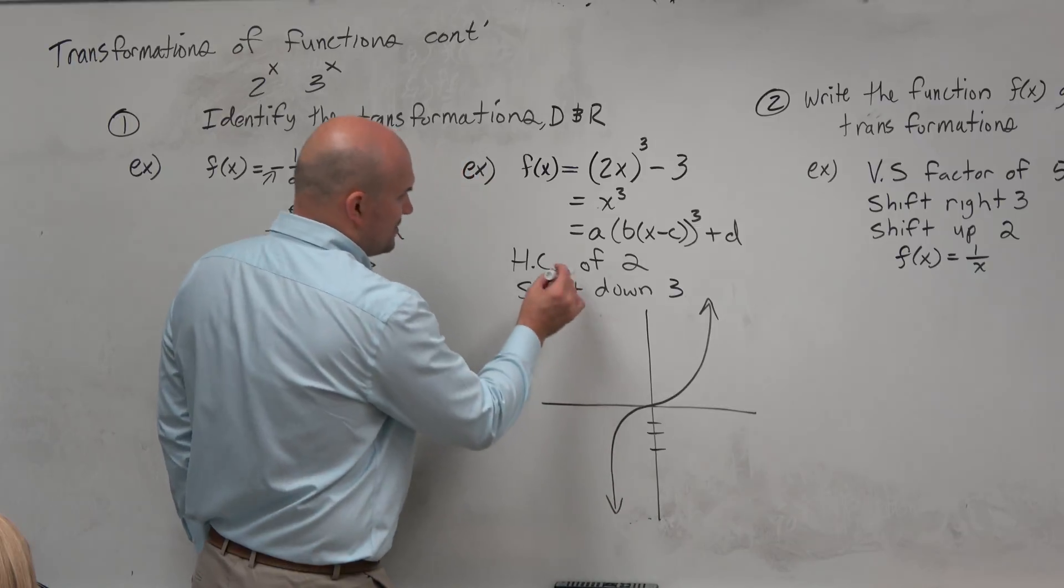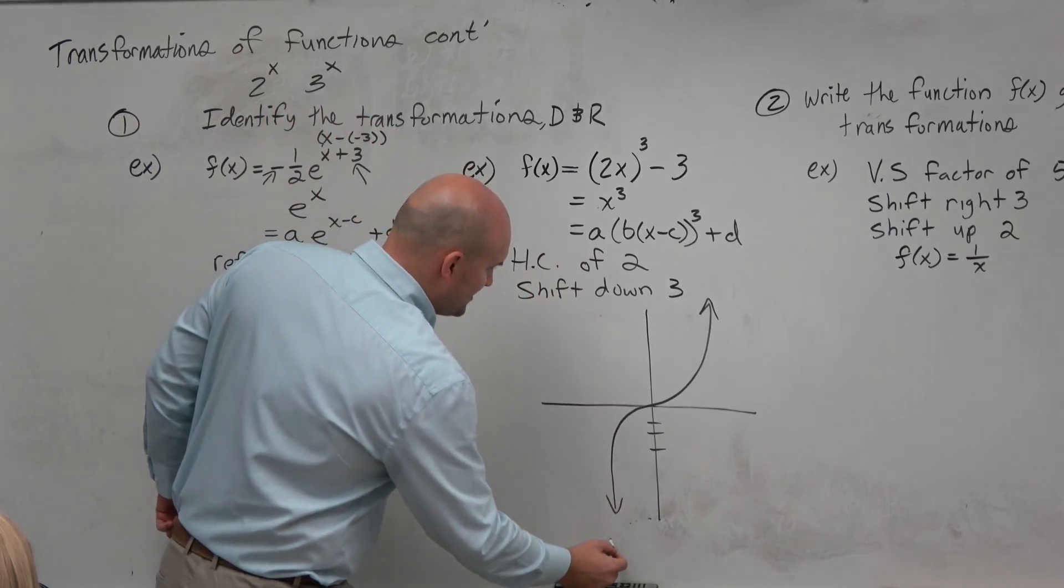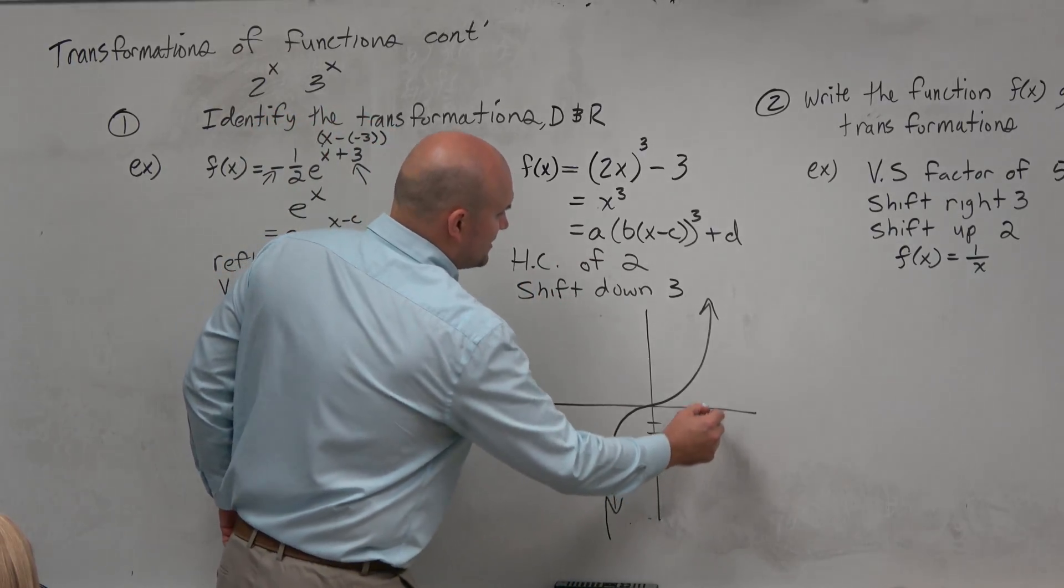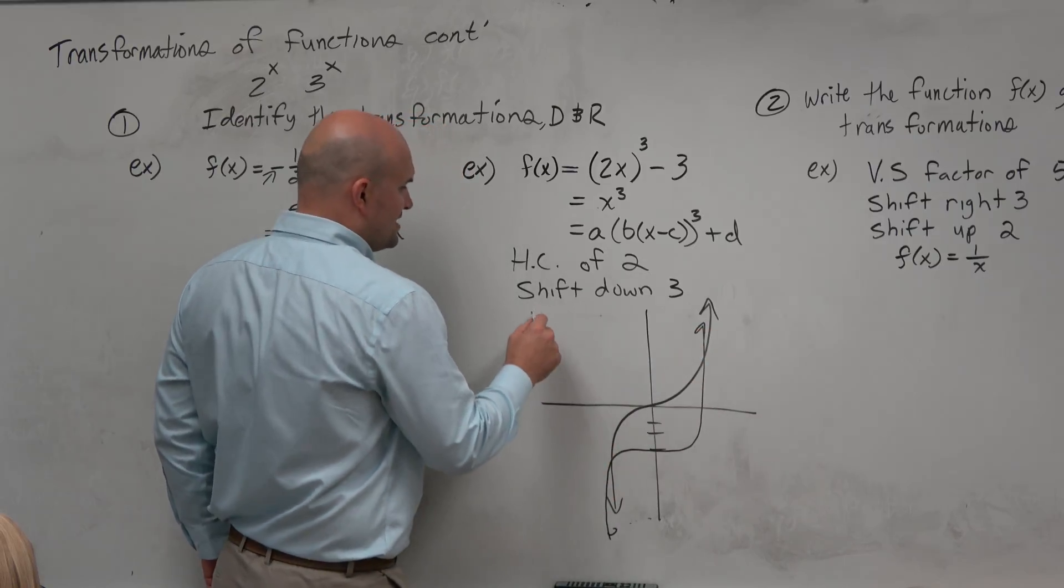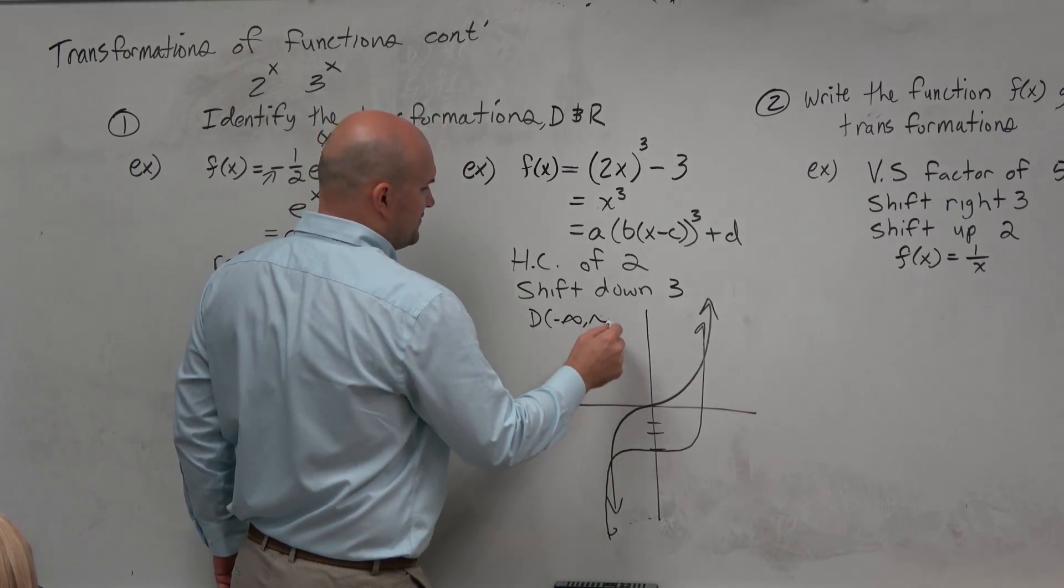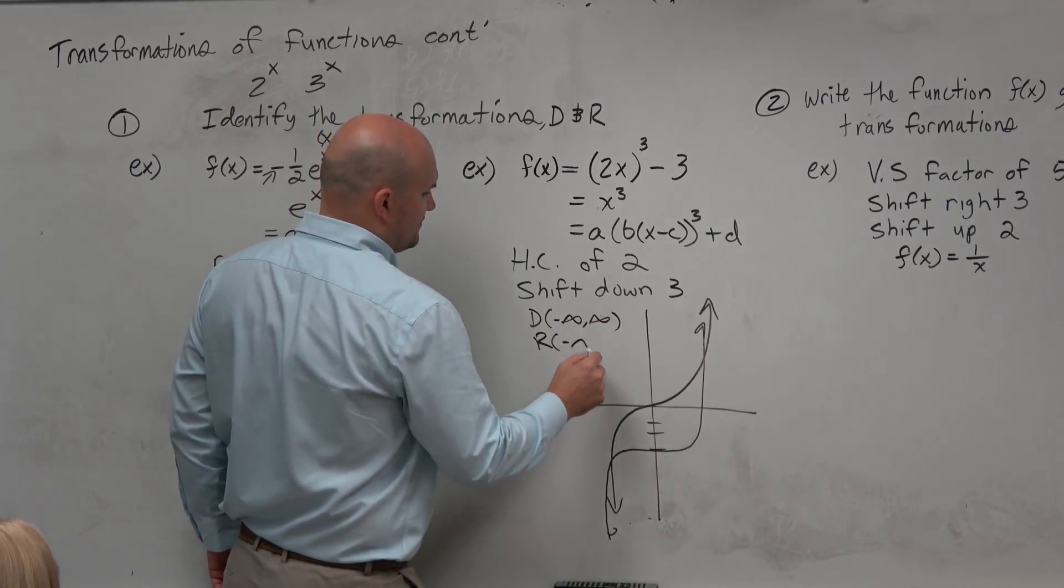Cool, the graph got you. Now, horizontal compression of 2. So maybe it'll be like we're compressing it a little bit. But guys, the domain range don't change. Negative infinity to infinity. Range, negative infinity to infinity.